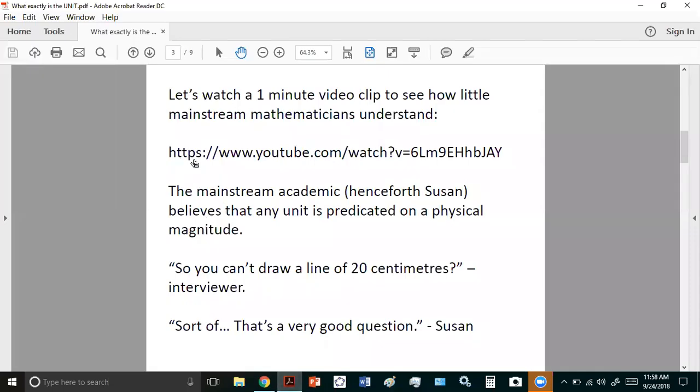Okay, so here's the link if you want to watch that entire video. The mainstream academic that we saw in that video has a name. I'm going to call her Susan because it's easy to pronounce. And she believes that any unit is predicated on a physical magnitude. So for example, she said, the interviewer asked her, so you can't draw a line of 20 centimeters? And she responded, sort of. That's a very good question.